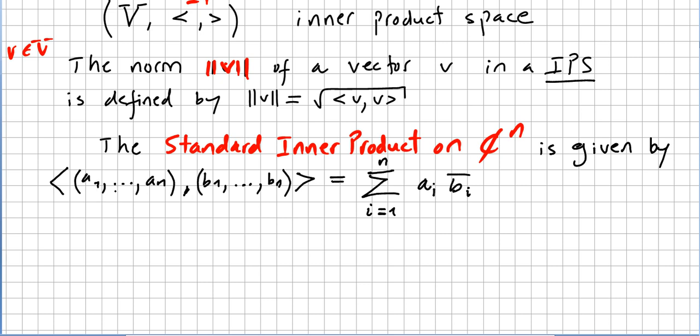This will be (a1, a2, ..., aN) and (b1, b2, ..., bN). Let me make a proper N here. So the inner product between (a1, ..., aN) and (b1, ..., bN) is given by the sum from i equals 1 to n of ai times the conjugate of bi.